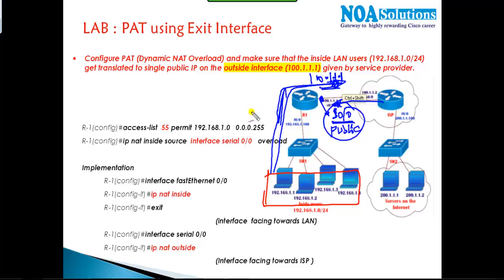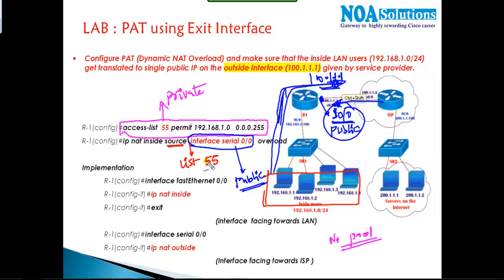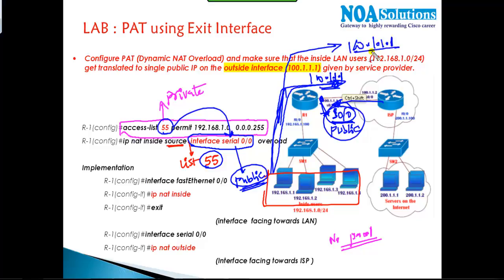In this scenario, we write an ACL to match the private network, but there is no need to define a pool. Instead, we write 'IP NAT inside source list 55 interface S0/0 overload', meaning all private IPs in ACL 55 get translated with whatever public IP is on the S0/0 interface, and overloaded. All LAN users will be translated with the public IP 100.1.1.1 instead of 50.1.1.1.